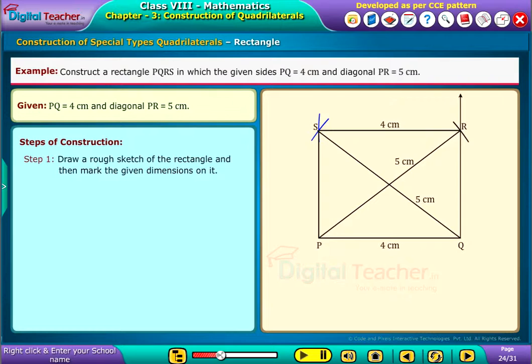Here the given two dimensions are sufficient to construct the rectangle, as we have one side and one diagonal. We know that in a rectangle the opposite sides are equal and also the two diagonals are equal.